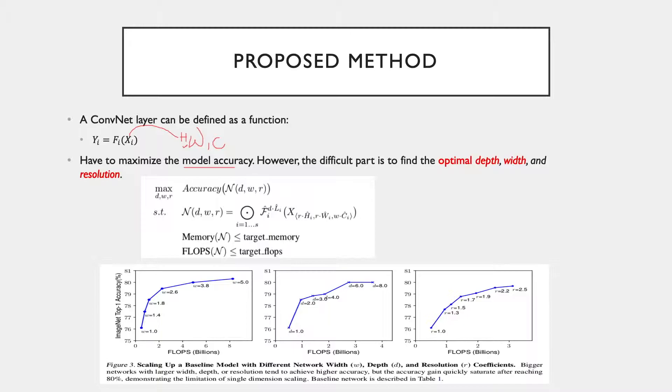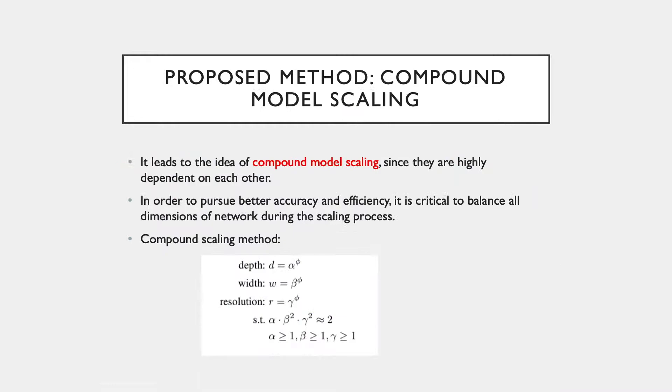And lastly, the resolution. As we know, with higher resolution input images, the model can capture more fine-grained patterns. The better the resolution, the better the accuracy. But then the accuracy gain will come to a state where it will be saturated at some point.